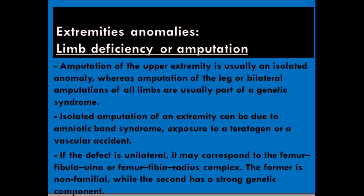The first abnormality in our lecture is limb deficiency or amputation. Amputation of the upper extremity is usually an isolated anomaly, whereas amputation of the leg or bilateral amputations of all limbs are usually part of a genetic syndrome. Isolated amputation of an extremity can be due to amniotic band syndrome, exposure to a teratogen, or a vascular accident.